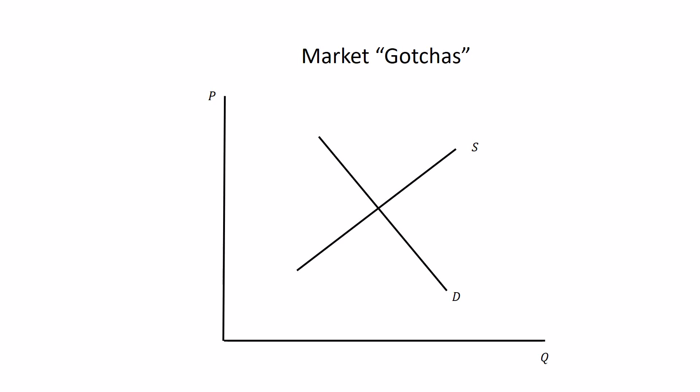Hey guys, welcome to a video on market tricks and gotchas and things that tend to mess up my students when they're reading multiple choice questions. I'm not going to get into a lot of the intuition in our model here about what shifts the curves. This is more just about the graphs and the anatomy of this model, the way we use it.